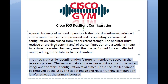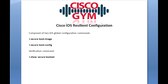The Cisco IOS Resilient Configuration feature is intended to speed up the recovery process. The feature maintains a secure working copy of the router image and the startup configuration at all times. These secure files cannot be removed by the user. This set of image and router running configuration is referred to as the primary boot set. Cisco IOS Resilient Configuration is composed of two IOS Global Configuration commands: secure boot image and secure boot config.